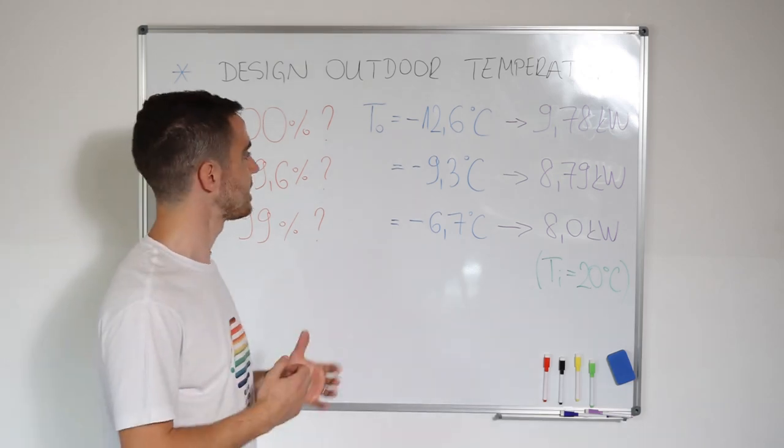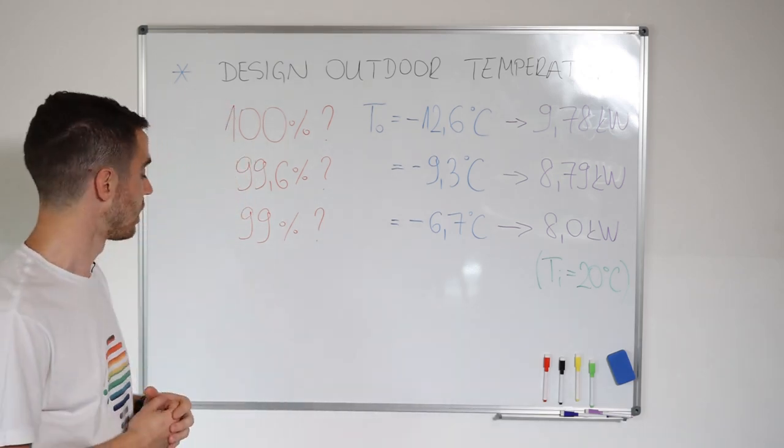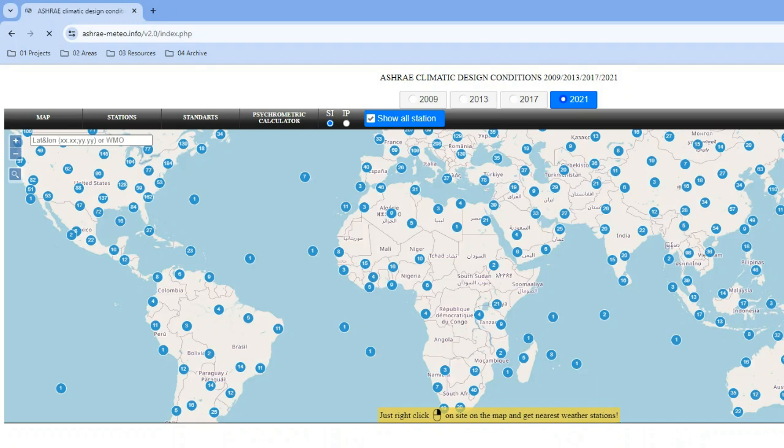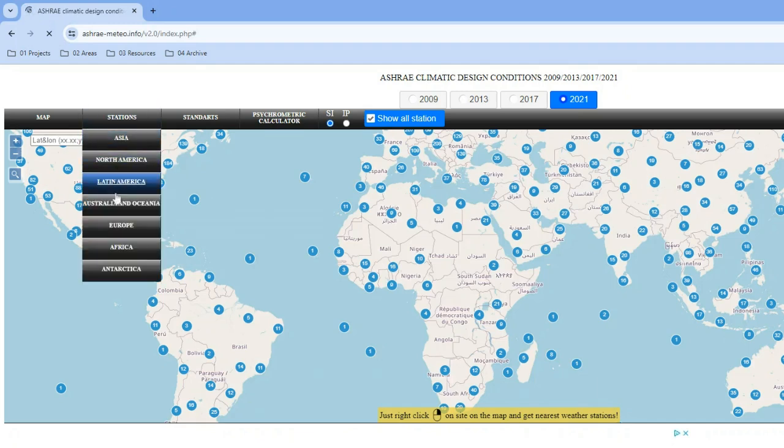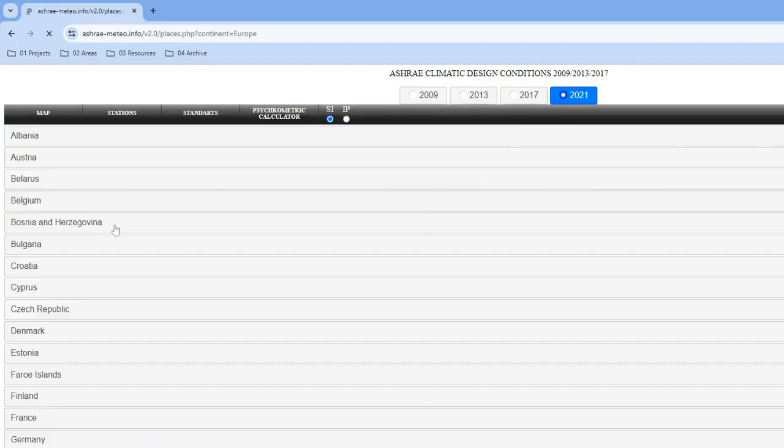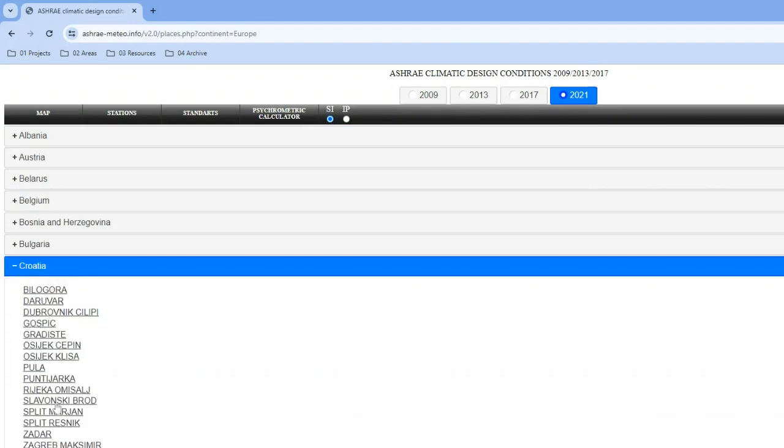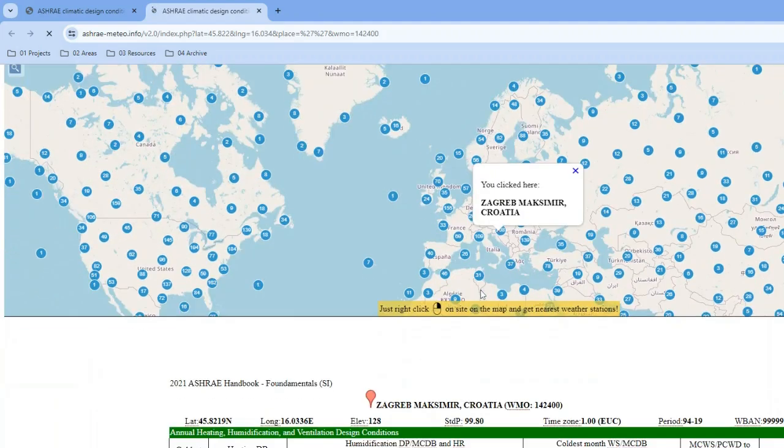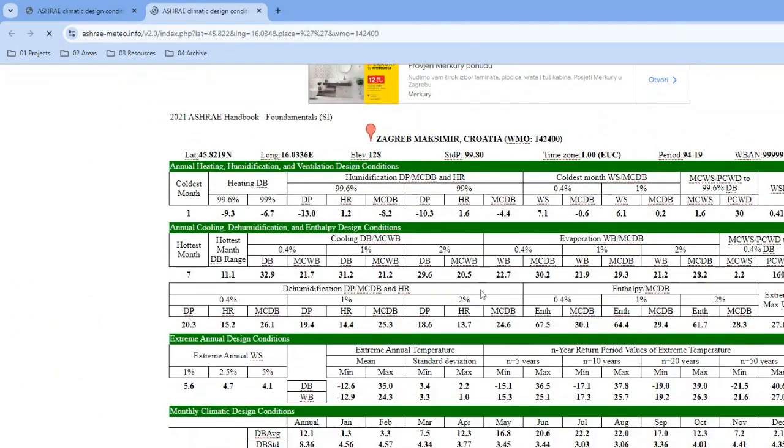You can read this data from your national authority bodies. For example, in Croatia, you can read this from this manual. But you can also go on ASHRAE website. I will put the link below. And on ASHRAE website, you can choose for each station what you want to use.